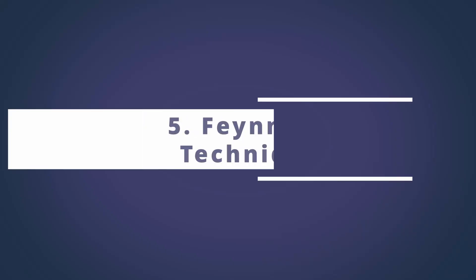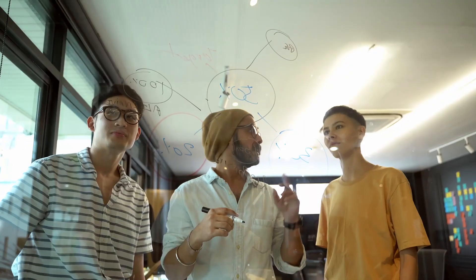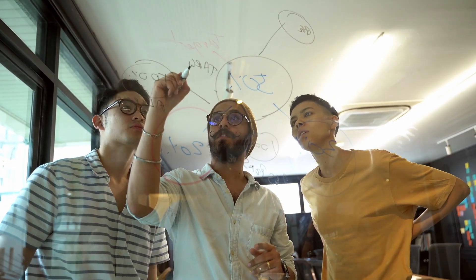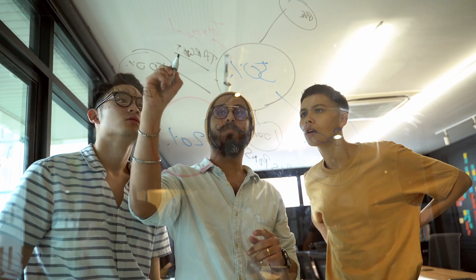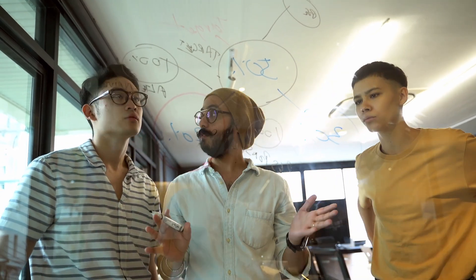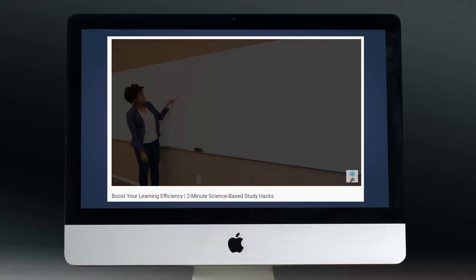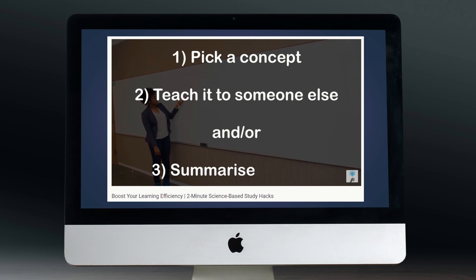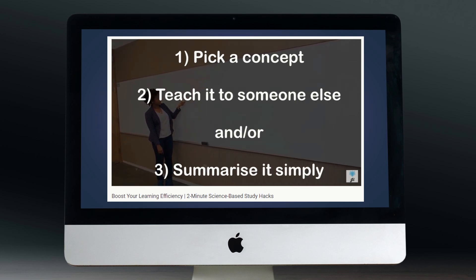And finally, we have the Feynman technique, which basically means that you should try and teach what you've learned. So for the above steps, try teaching them using your own definitions and diagrams, because this will help you identify any knowledge gaps you might have. And it will also help out your classmates as well. And if you're interested in learning more about this technique, then I have a separate video that goes into more detail up here.